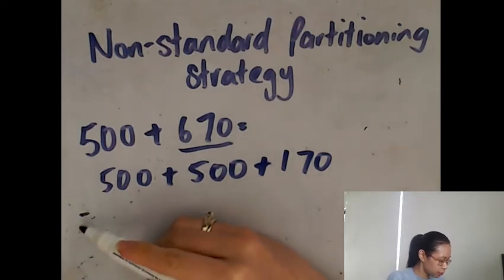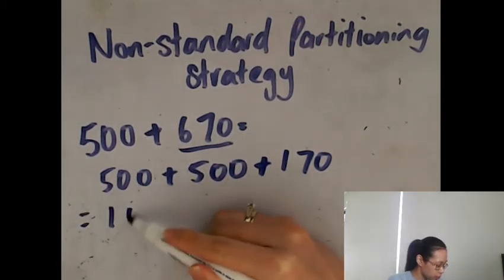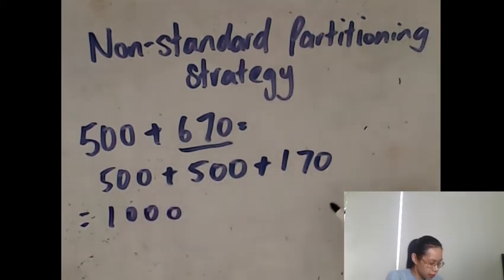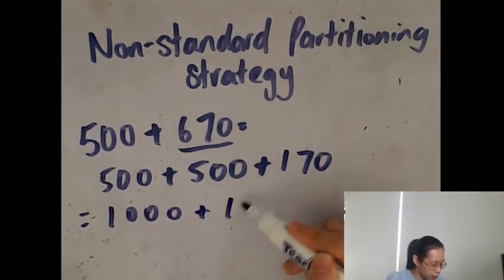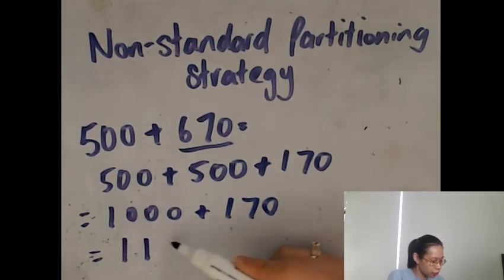So then all you have to do is add 500 and 500, which is 1000, and then you add 170. If you add 1000 plus 170, your answer will be 1170.